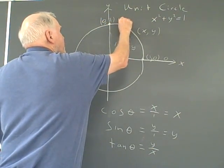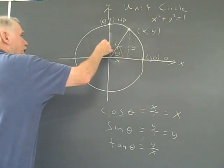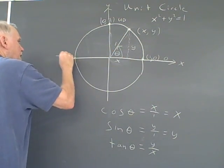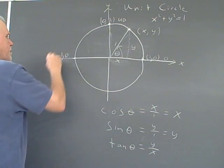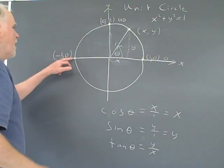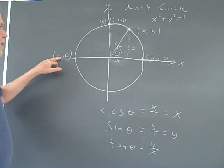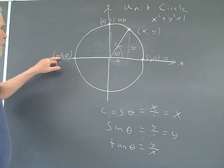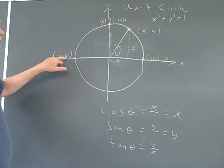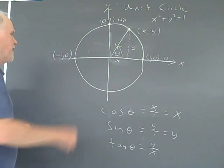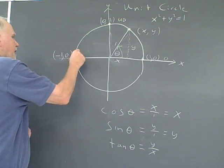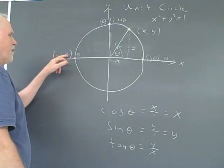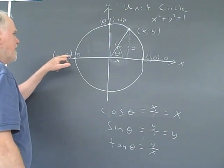We come around here to 180, and this point here is negative one and zero. And so the cosine of 180 degrees, or pi, is negative one, and the sine of 180 degrees is zero. The tangent of course is the y over the x, so that's zero. So we have an ordered triple there. Cosine, sine, tangent of 180 degrees.